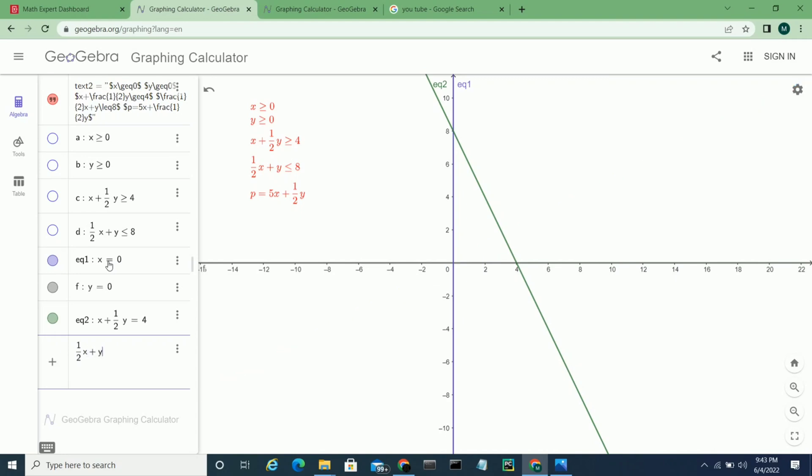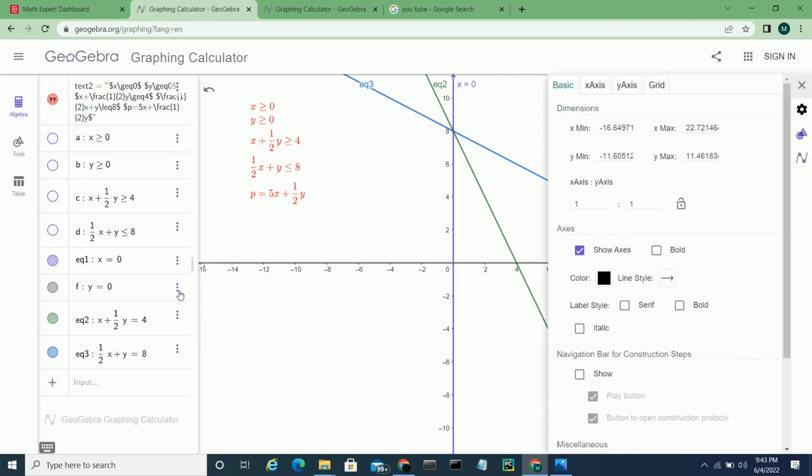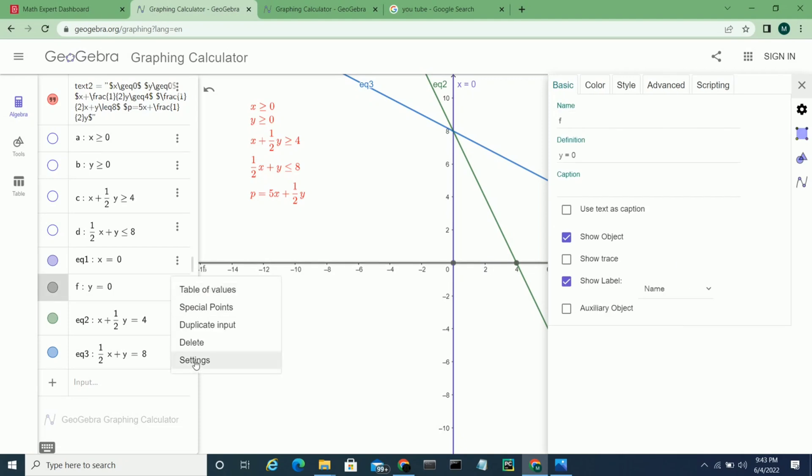Now fourth is 1/2 x plus y equal to 8. So these are all lines with the given equations. Now we will label it.